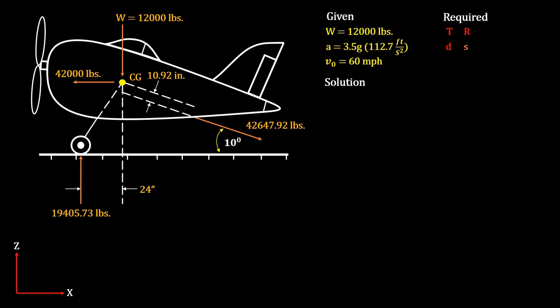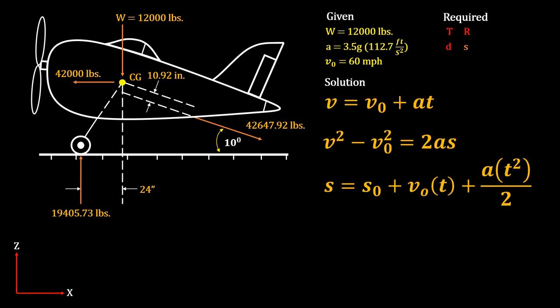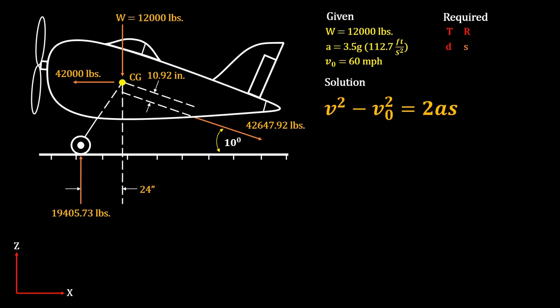Now let's proceed to our final requirement — the stopping distance s. Since we are dealing with pure translation and constant acceleration, we can use kinematic formulas from our pure translation lecture. Since we need to find s and do not have a value for time, we cannot use the first or third formula. This leaves us with the second formula, which is the correct one to use.